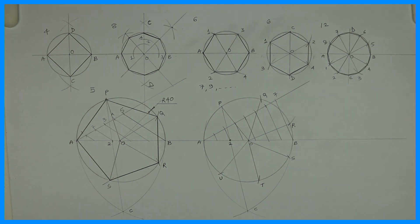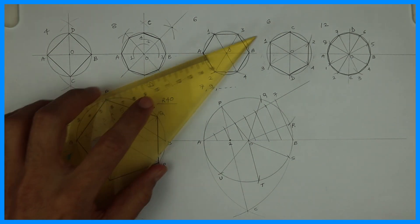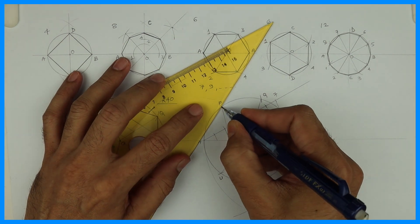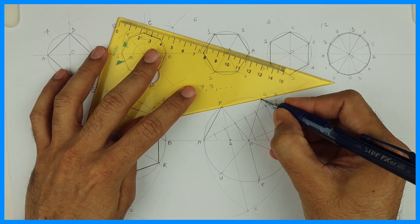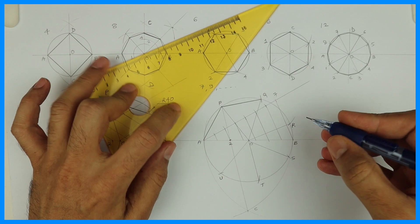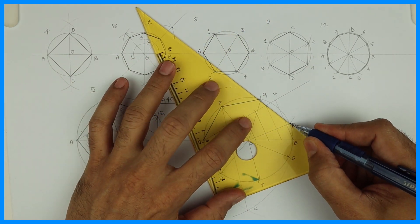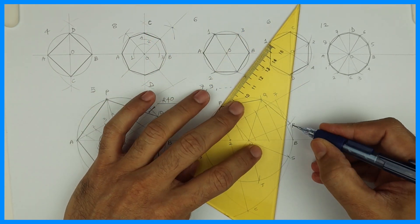Then you join A to B, P to Q, Q to R, R to S, S to T, T to U, and A to U. So you will get the required heptagon or septagon.